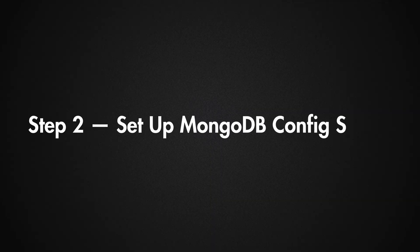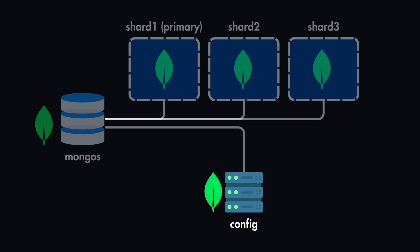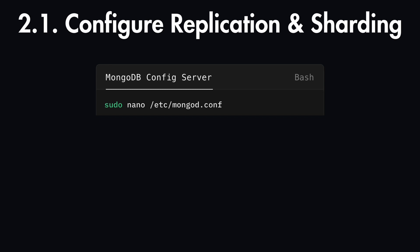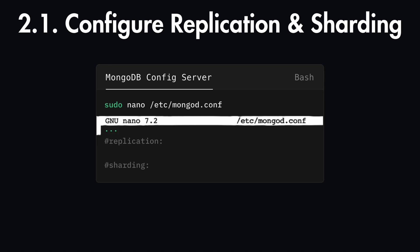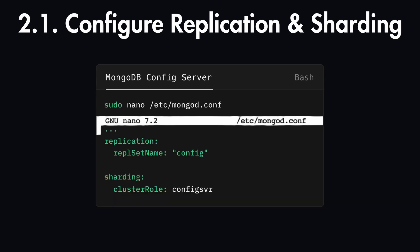Next, we need to set up the MongoDB configuration server. We will configure this as a replica set, which will enable it to function as the configuration server for our sharded cluster. We need to edit the MongoDB configuration file on this server. Once the file is open, you can find the replication and sharding fields, which are commented out at the beginning. We need to uncomment the replication line and add the replica set name, setting it to 'config'. We will also uncomment the sharding line and specify the cluster role as 'configsvr'. This setup tells MongoDB that this instance is part of the sharded cluster and will serve as a config server. Save the changes and restart the MongoDB server — this enables replication for the server.